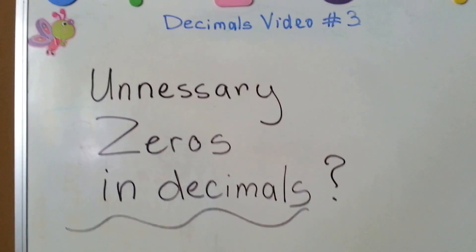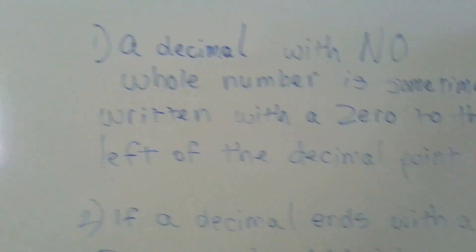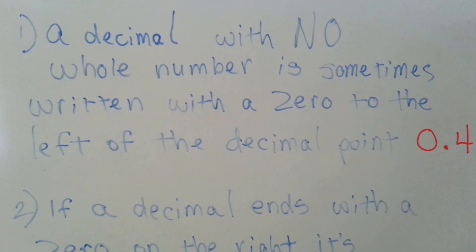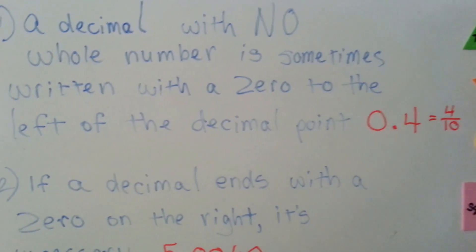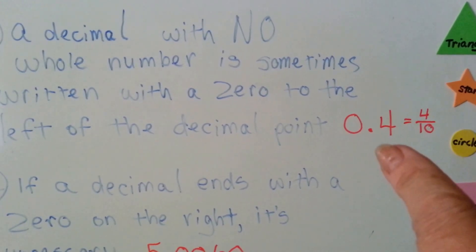Unnecessary zeros and decimals. Can that be? Absolutely. Check this out. A decimal with no whole number is sometimes written with a zero to the left of the decimal point. Just like that.